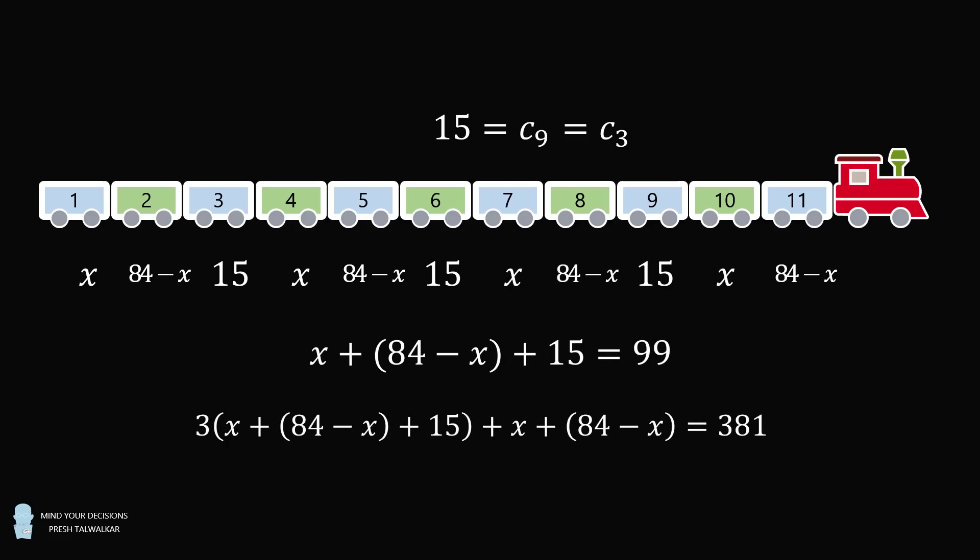Because any three consecutive passenger carriages will have a total of 99 passengers, and the total of all of these is equal to 381. So this is a more general solution.